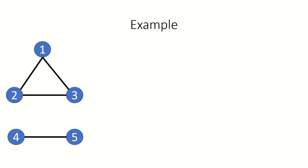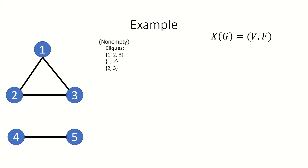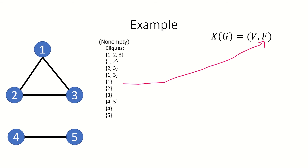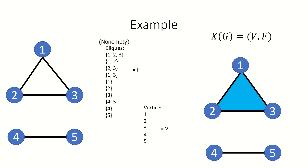As an example, if we have this graph G, what is its clique complex? Its cliques are {1}, {2}, {3}, {1,2}, {2,3}, {1,3}, {1,2,3}, and {4}, {5}, {4,5}. So those will be the faces of our clique complex, and the vertices are the vertices of the graph. So this is our clique complex.